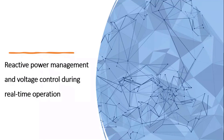The topic is reactive power management and voltage control during real-time operation. We will look into how this is being done at the planning level, how it is being done at the policy level, what changes are required, and what problems we face when there is no proper penalty mechanism for reactive power in the system.